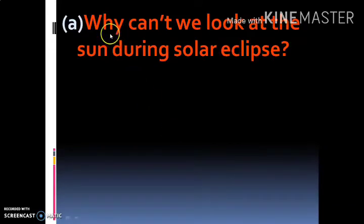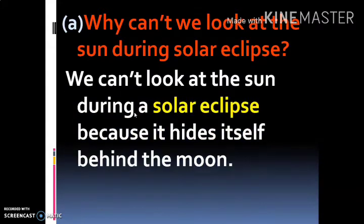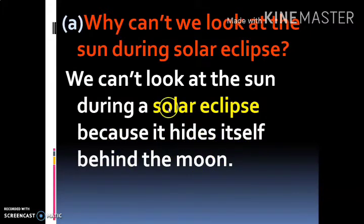First question: Why can't we look at the sun during a solar eclipse? सूर्य ग्रहण के समय हमें सूरज क्यों नहीं दिखाई देता? तो इसका answer है: Because it hides itself behind the moon. सूर्य ग्रहण के समय हम सूरज को नहीं देख सकते क्योंकि वह चंद्रमा के पीछे छिप जाता है।